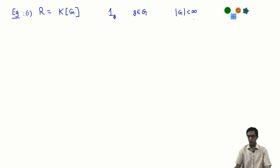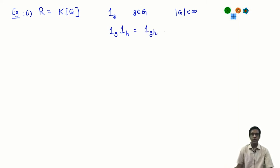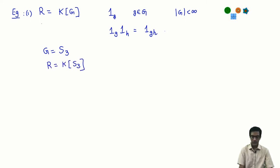Recall here I am taking G to be a finite group. These form a basis of this space thought of as a vector space over k. What is interesting here really is the ring structure. We take 1_g multiplied by 1_h, which equals 1_gh. Look back on the lectures on the group ring to recall the definition. Let us do a specific case: take G to be the group S₃, the symmetric group, and k to be any field. So R is k[S₃] in this case.